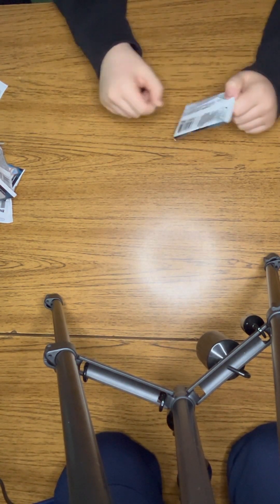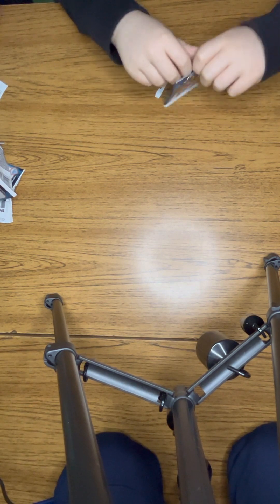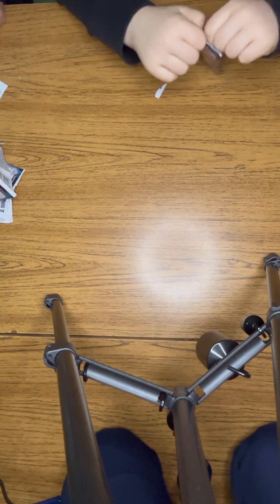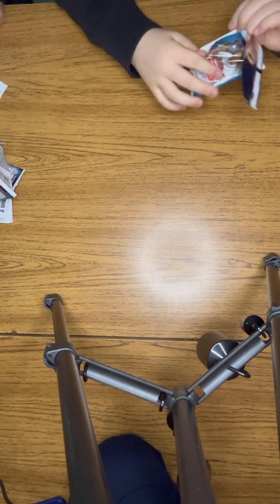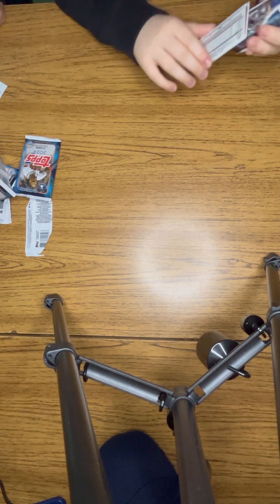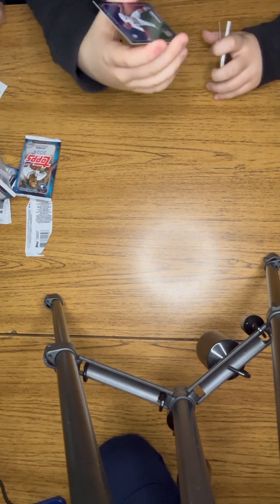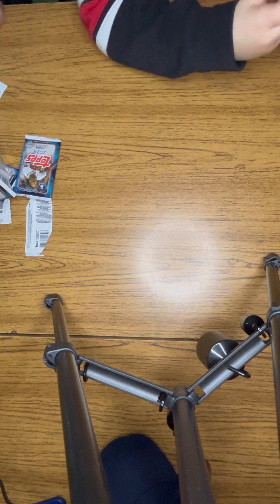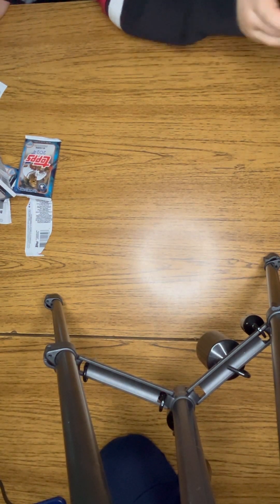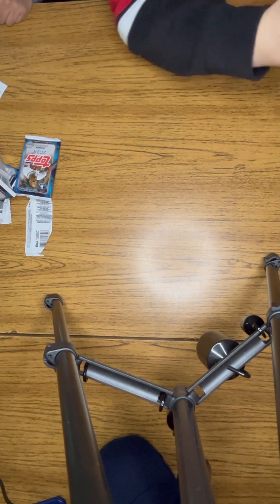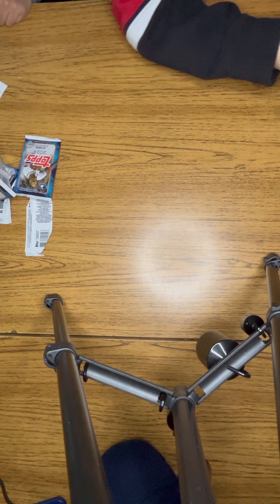This is our last pack. Let's see what we get. To start off we have a Jose Fermin again, the St. Louis Cardinals rookie, a Mickey Moniak Angels, a Walker Buehler, an Adolis Garcia, a Bryce Harper, and a Michael Massey.